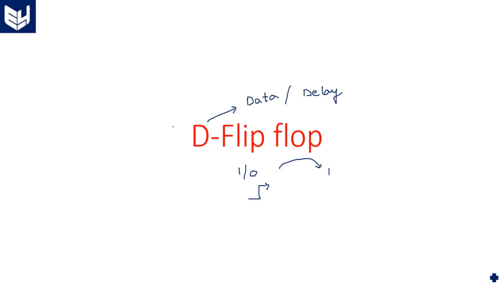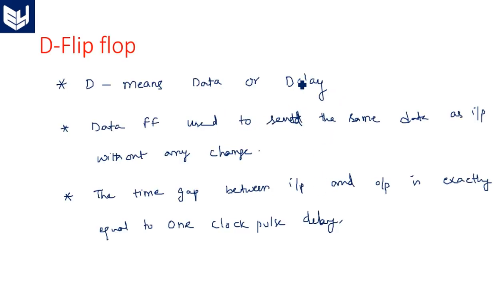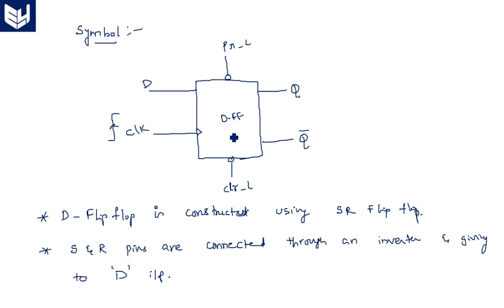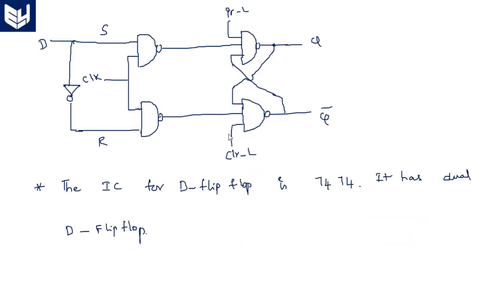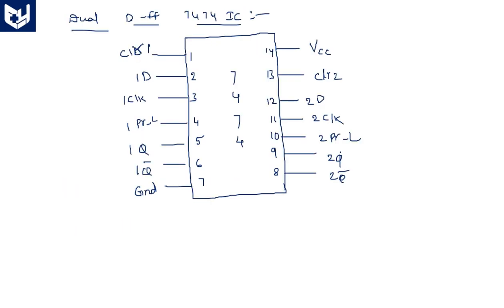In this video I am going to explain the VHDL code for the D flip-flop IC 7474. In the last class I started the D flip-flop — D means data or delay flip-flop. This is the symbolic representation of the D flip-flop with preset and clear pins, and this is the internal structure where the D flip-flop is constructed using an SR flip-flop by taking the inverting operation between S and R connected to D.